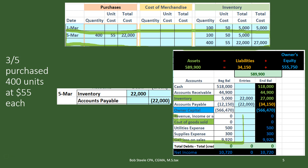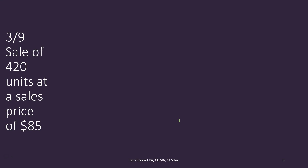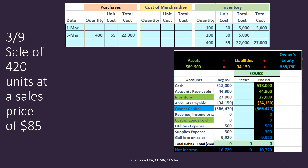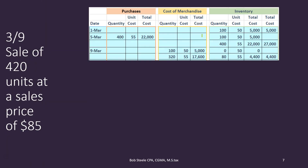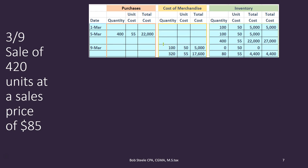On 9/3 we sold 420 units of inventory. This is where we left off — we had $27,000 represented by 100 units at $50 and 400 units at $55. The question is what will be the cost of these units that we're going to sell? Using the first in first out method, we assume that we sold the first ones in first out. That means the 100 units at $50 would be the ones sold first. In our worksheet we'll put that in the cost of goods sold or cost of merchandise columns.